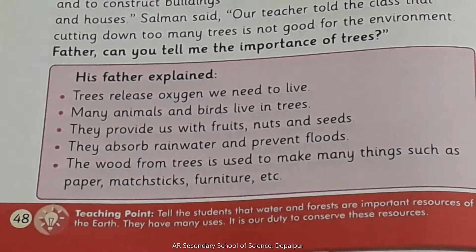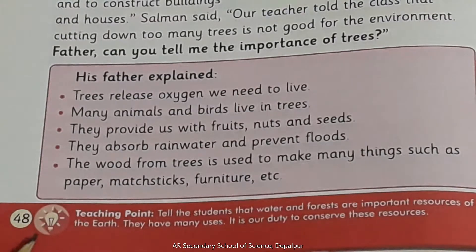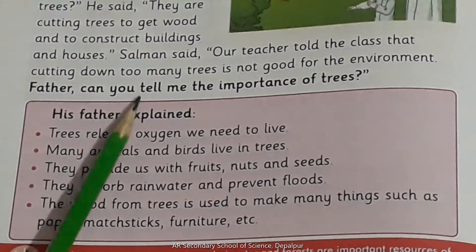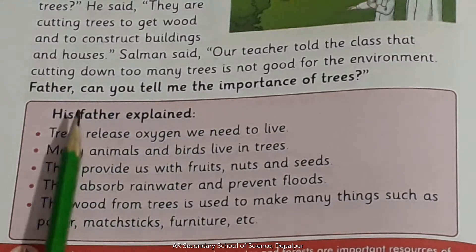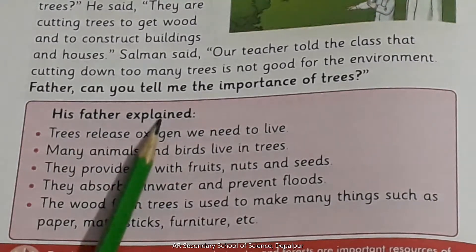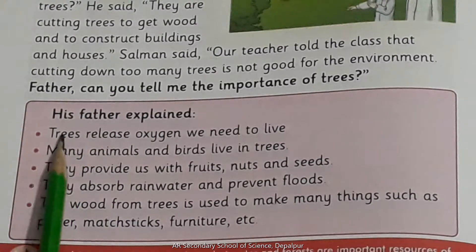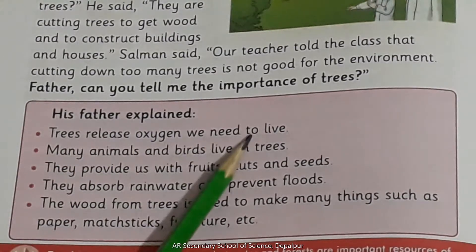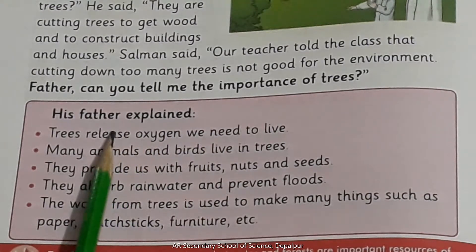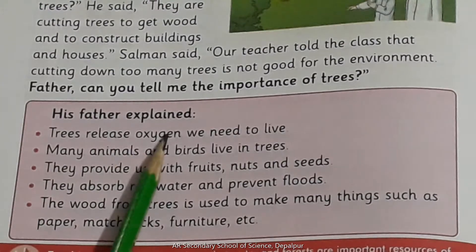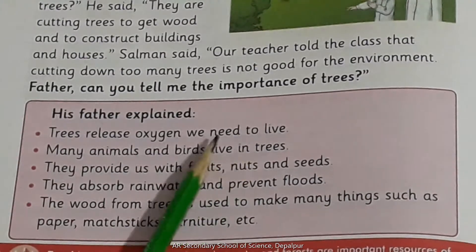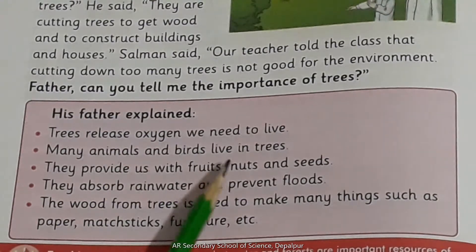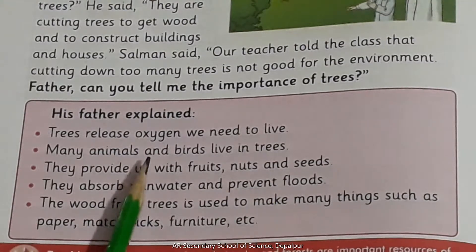Open your book page number 48, let's start reading. 'Father, can you tell me the importance of trees?' — ابو، کیا آپ مجھے درختوں کی اہمیت بتا سکتے ہیں؟ His father explained: trees release oxygen we need to live. درخت oxygen release کرتے ہیں جس کی ہمیں زندہ رہنے کے لیے ضرورت ہوتی ہے۔ Many animals and birds live in trees — بہت سے پرندے اور جانور درختوں پر رہتے ہیں۔